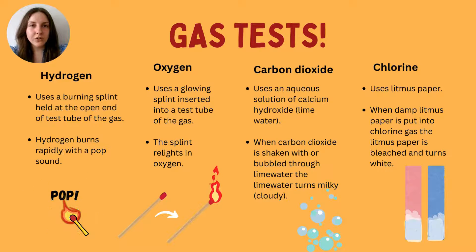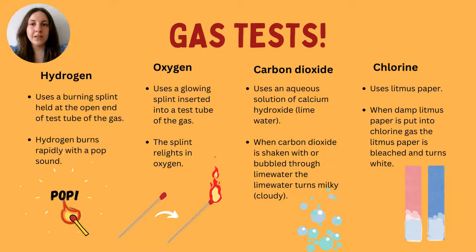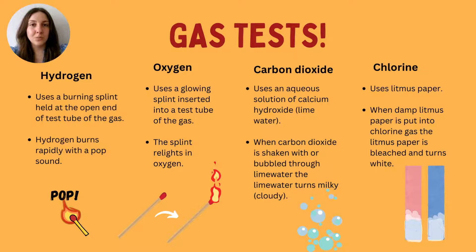The last gas is chlorine. This is a very toxic gas — again, use a fume cupboard and do not breathe in the vapors. You use litmus paper that is slightly dampened, and it will actually bleach that litmus paper if chlorine gas is present.